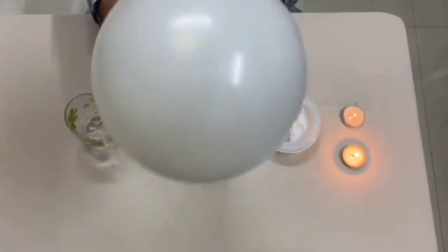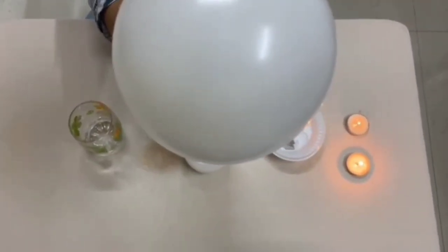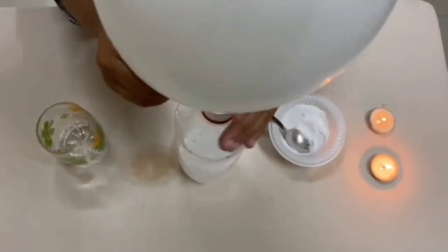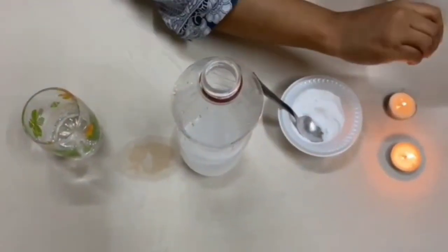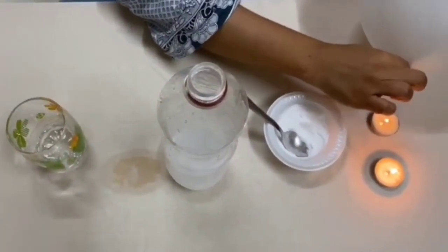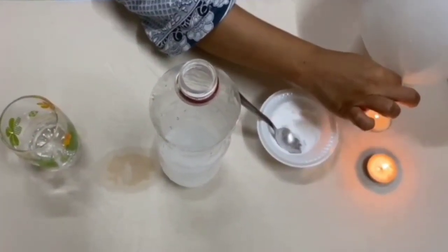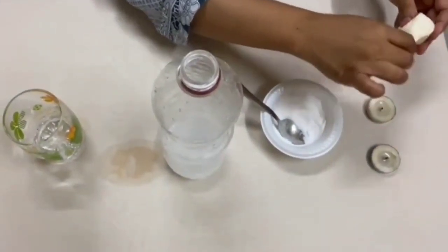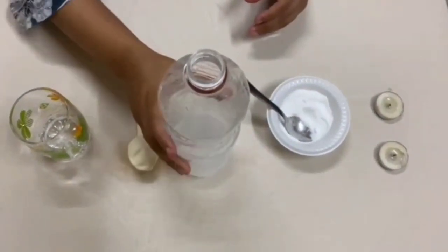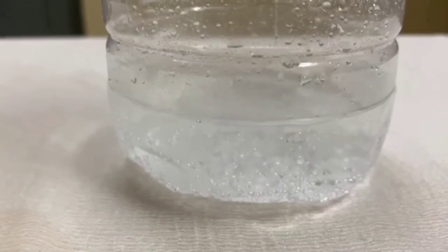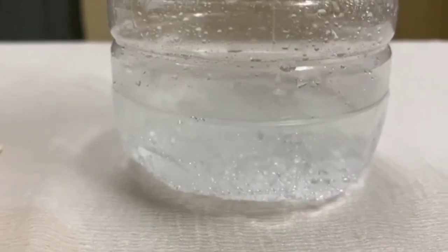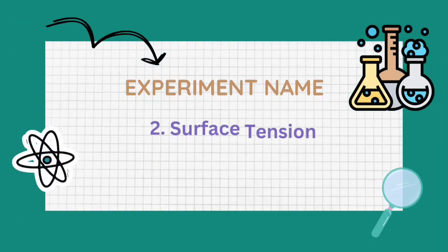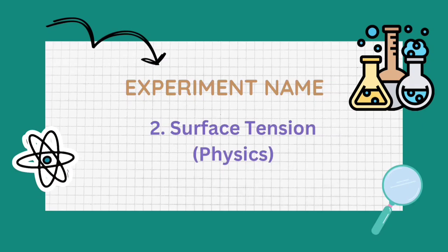Since carbon dioxide is a fire extinguisher, it blows off the candles. These are the effervescence of carbon dioxide gas released. Our next experiment is surface tension.